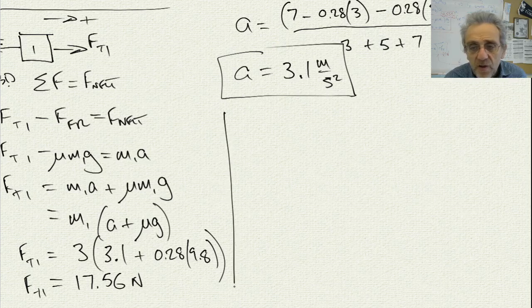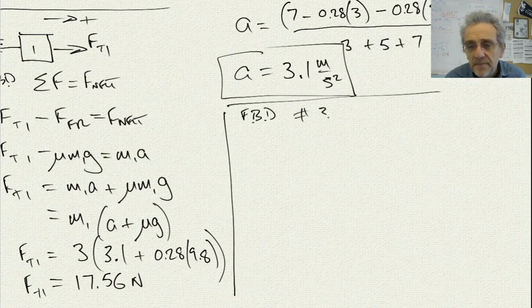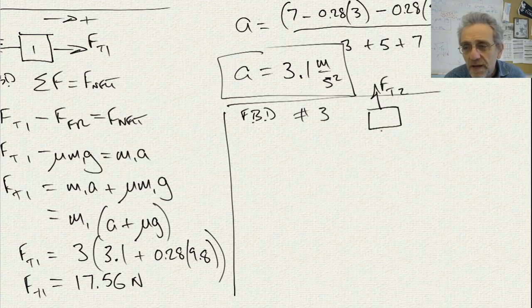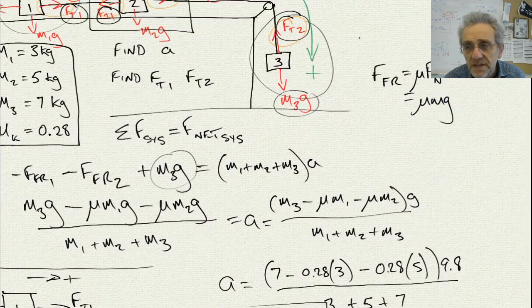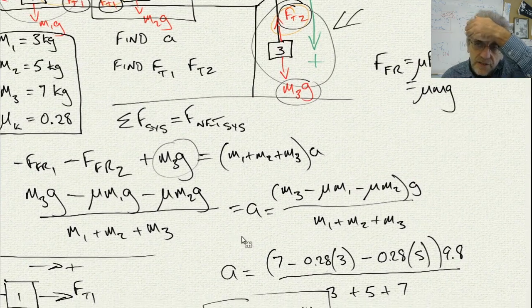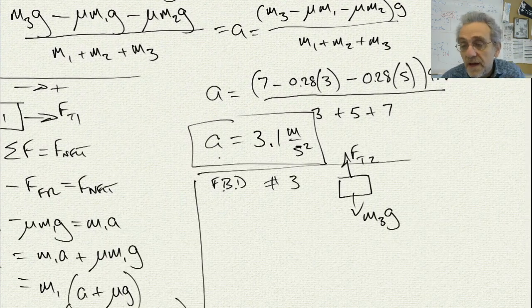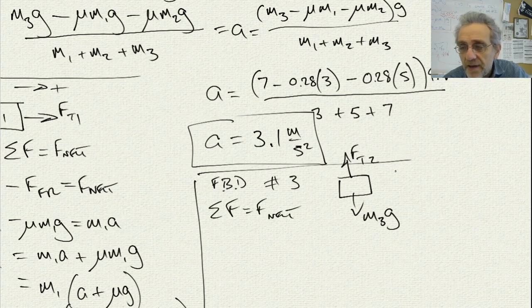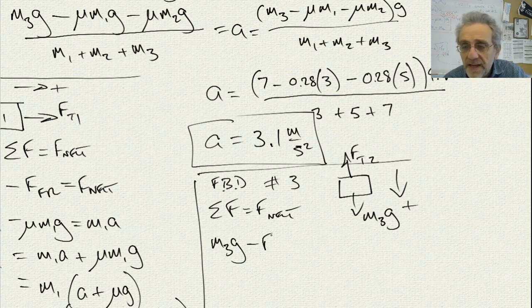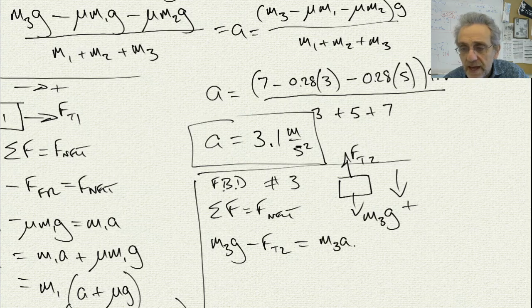Now if I go ahead and calculate the free body diagram of number 3, here is the drawing again. I have FT2 going up and I have M3G going down. It's from here. You can see it right there. And so, the summation of the forces is equal to the net force. And I know that down here is positive. So I'll have M3G minus FT2. And that's going to give me M3A as F net.